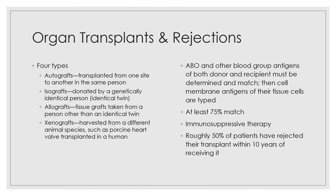There are four major types of transplants or grafts: autografts (transplanted from one site to another in the same person), isografts (donated by genetically identical persons, such as an identical twin), allografts (tissue grafts taken from a person other than an identical twin), and xenografts (harvested from a different animal species, such as a porcine heart valve transplanted in a human). ABO and other blood group antigens of both donor and recipient must be determined and matched, and cell membrane antigens in tissue cells must be typed — needing at least a 75% match. Patients are on lifelong immunosuppressive therapy, and roughly 50% will reject their transplant within 10 years.